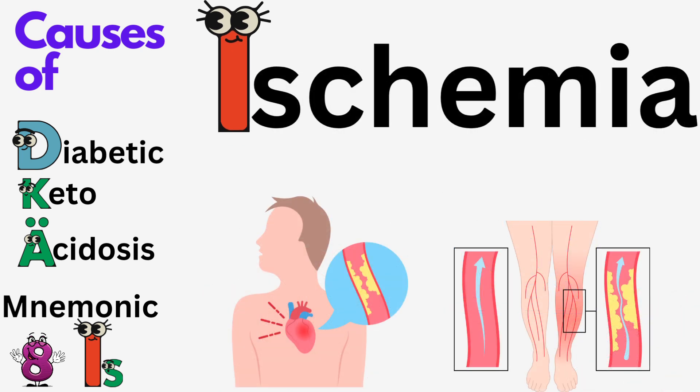2. Ischemia. Consider conditions involving reduced blood supply, such as acute coronary syndrome, critical limb ischemia, or ischemic bowel.